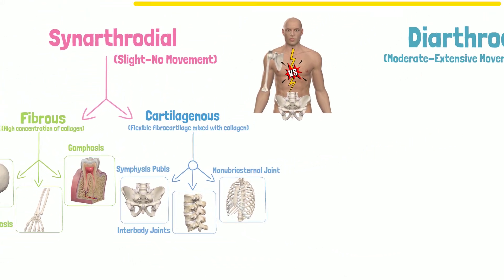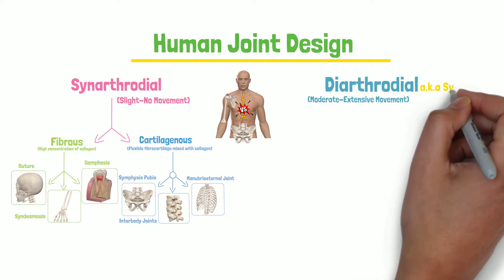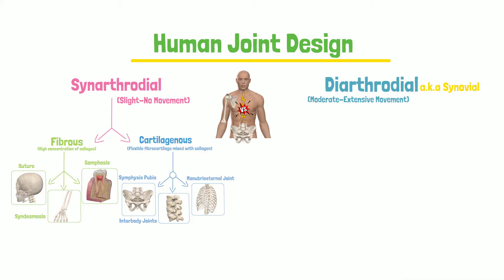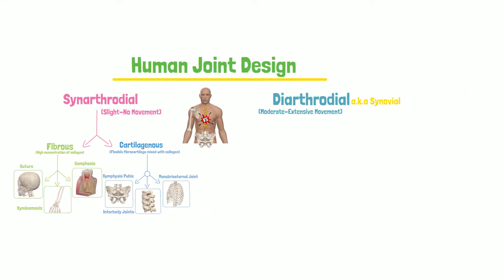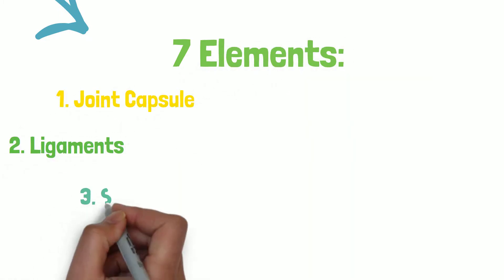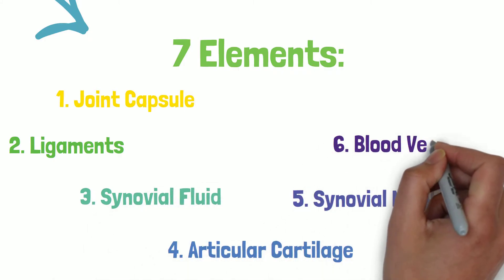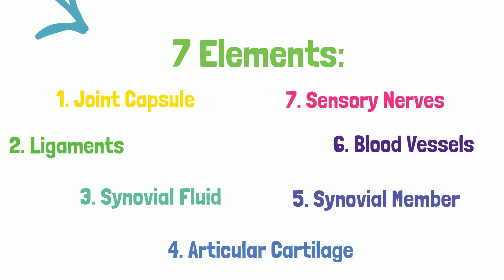Now let's take a look at the joints that allow the most mobility in the human body — the diarthrodial joints. Diarthrodial joints are also referred to as synovial joints because they possess a synovial cavity. But it's not their only feature. Diarthrodial joints always exhibit the following seven elements: joint capsule, ligaments, synovial fluid, articular cartilage, synovial membrane, blood vessels, and sensory nerves.